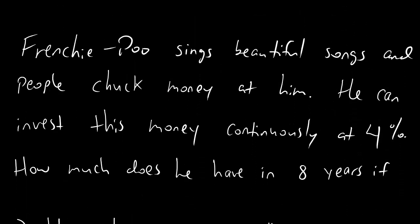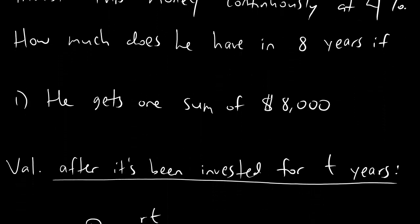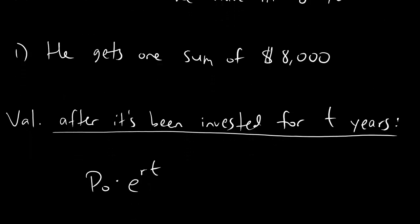Here's what's going on. Mr. Frenchy Poo sings beautiful songs, and people chuck money at him because the songs are so good. He can invest this money continuously at 4% interest. How much does he have in 8 years if he gets one big fat sum of $8,000? This is nothing new — you should be able to answer this already. The value after being invested for T years is P₀ times E to the RT.